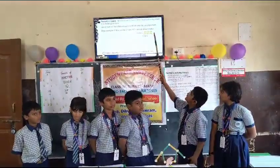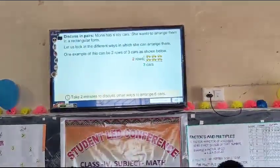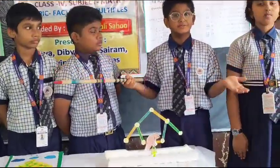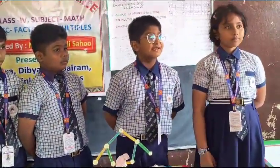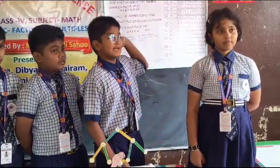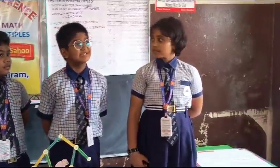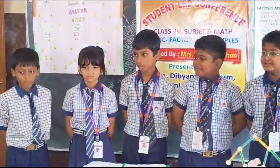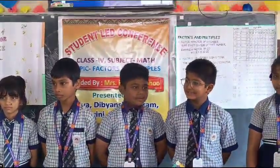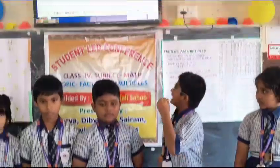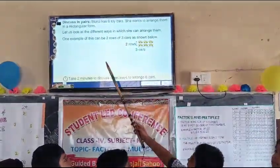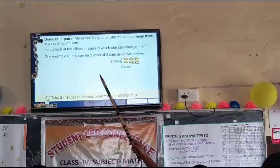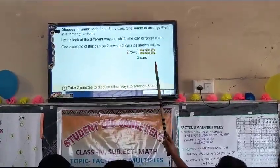Mona has 6 toy cards. She wants to arrange them in a rectangular form. She can arrange them in different ways. Mona can arrange the toy cards in rows and columns. One example of this can be 2 rows and 3 cards, as shown below.